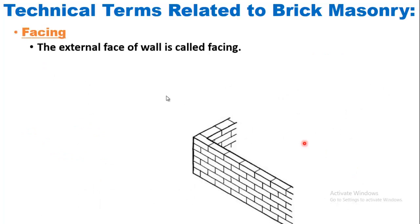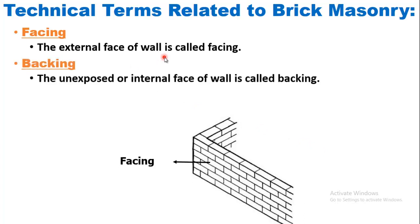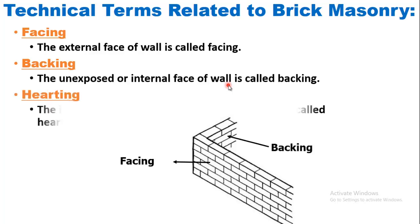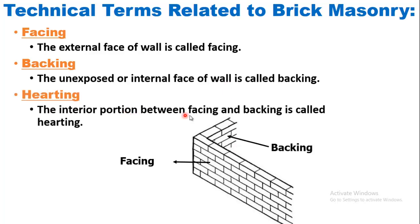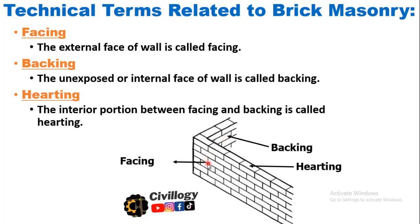Facing: the external face of a wall is called facing. Backing: the unexposed or internal face of a wall is called backing. Hearting is the interior portion between facing and backing. As you can see, if this is the backing side and this is the facing side of the wall, then the area between the backing and facing is called hearting.